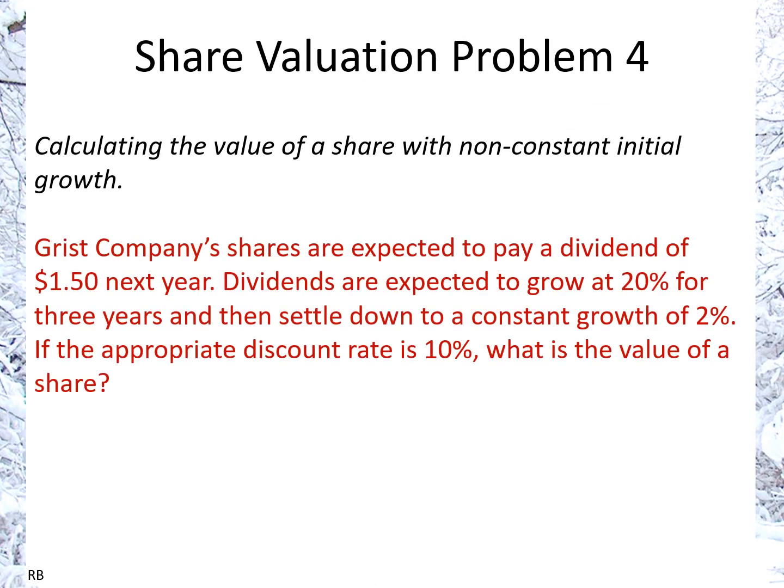Share Valuation Problem 4: calculating the value of a share with non-constant initial growth. Grist Company's shares are expected to pay a dividend of $1.50 next year. Dividends are expected to grow at 20% for 3 years and then settle down to a constant growth of 2%. If the appropriate discount rate is 10%, what is the value of a share?